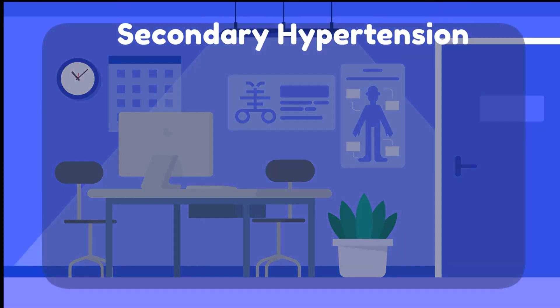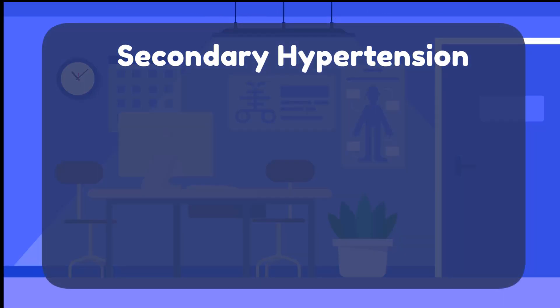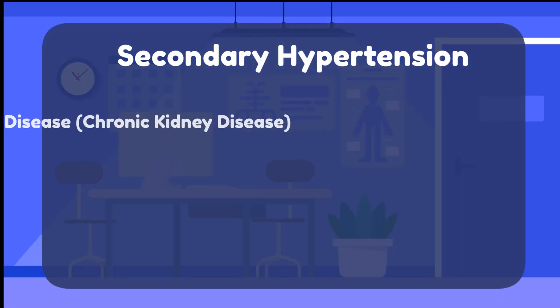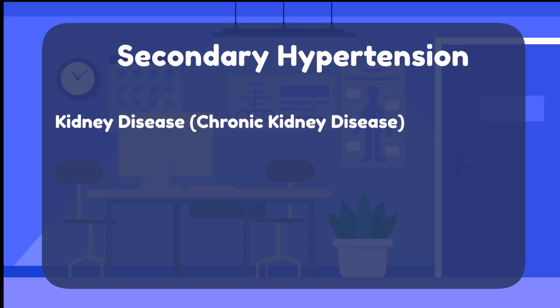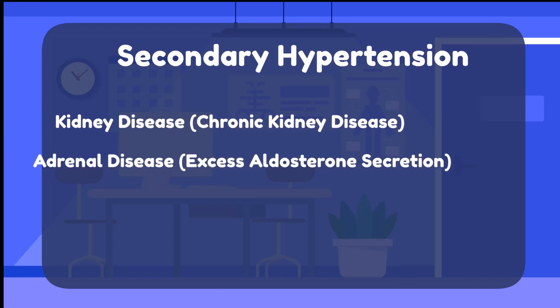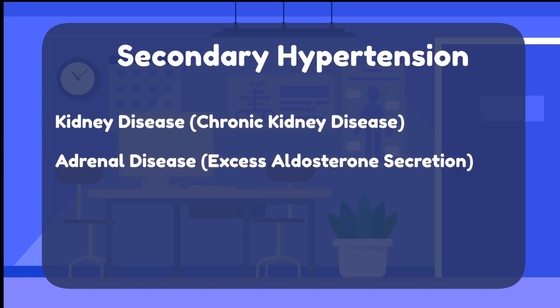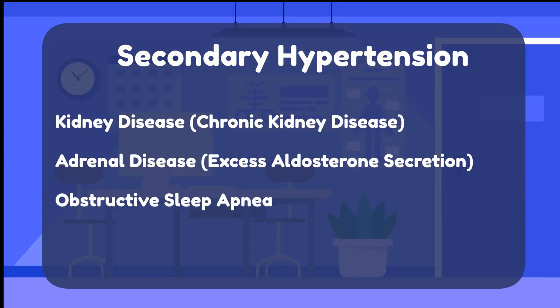Secondary hypertension can be caused by renal disease such as chronic kidney disease, adrenal disease such as excess aldosterone secretion, obstructive sleep apnea, or medications.